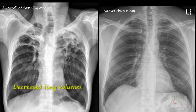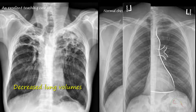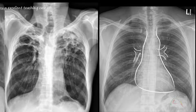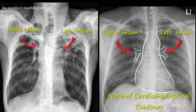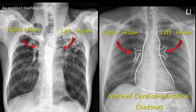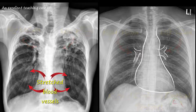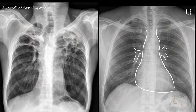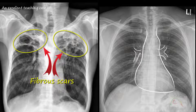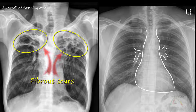The first thing you should note is the loss of lung volumes bilaterally. The lungs look smaller. Both hila are displaced upward. Mediastinal contours are very different from what they should normally be. Blood vessels appear to be stretched and are being pulled up. Very obvious fibrous scars and bullous changes are in both upper zones.